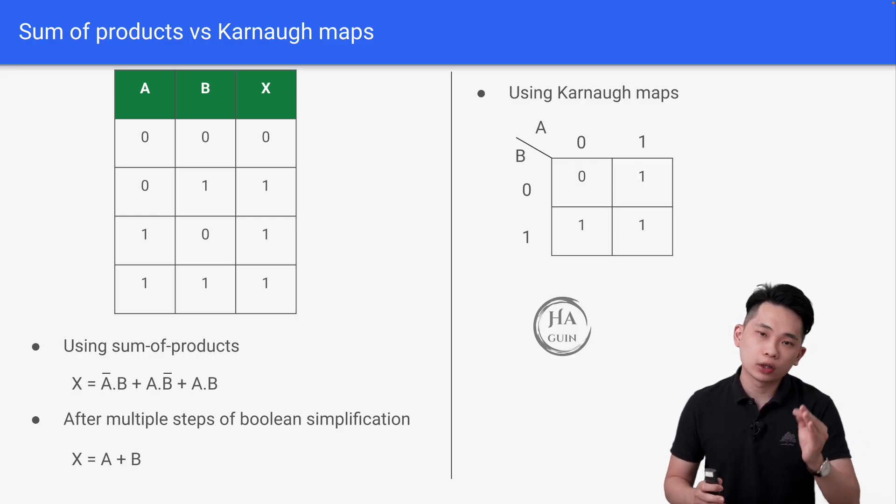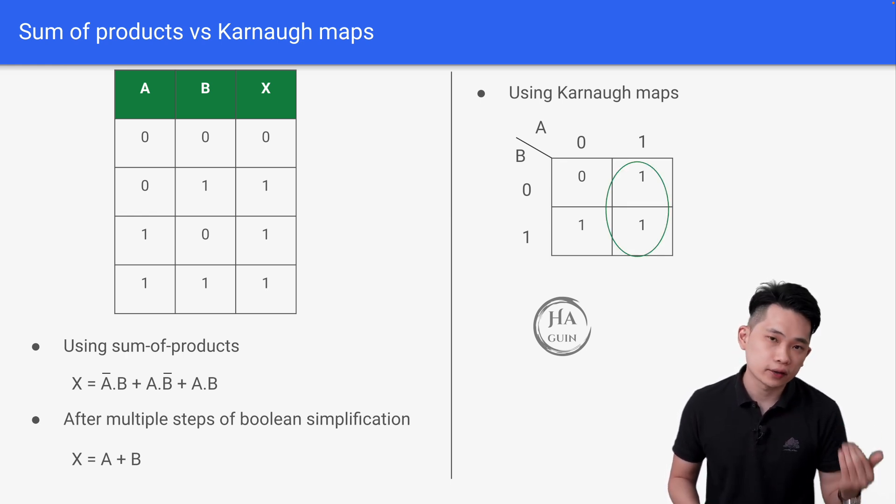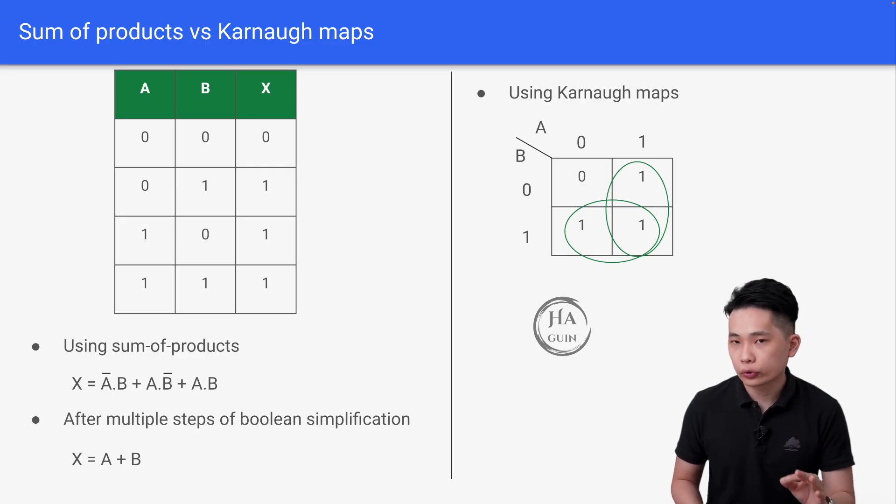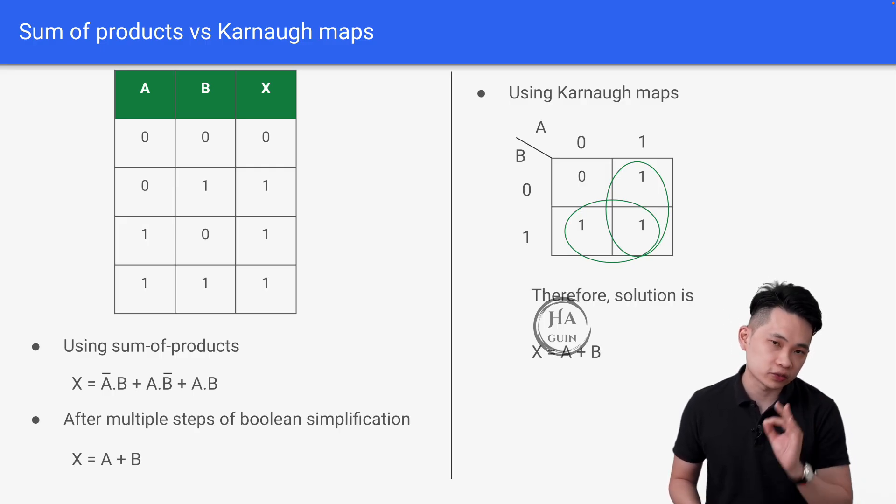Then we will find the overlapping section whereby the value is 1. So we have one circle here and another circle here. Therefore, the solution is X equals A plus B.